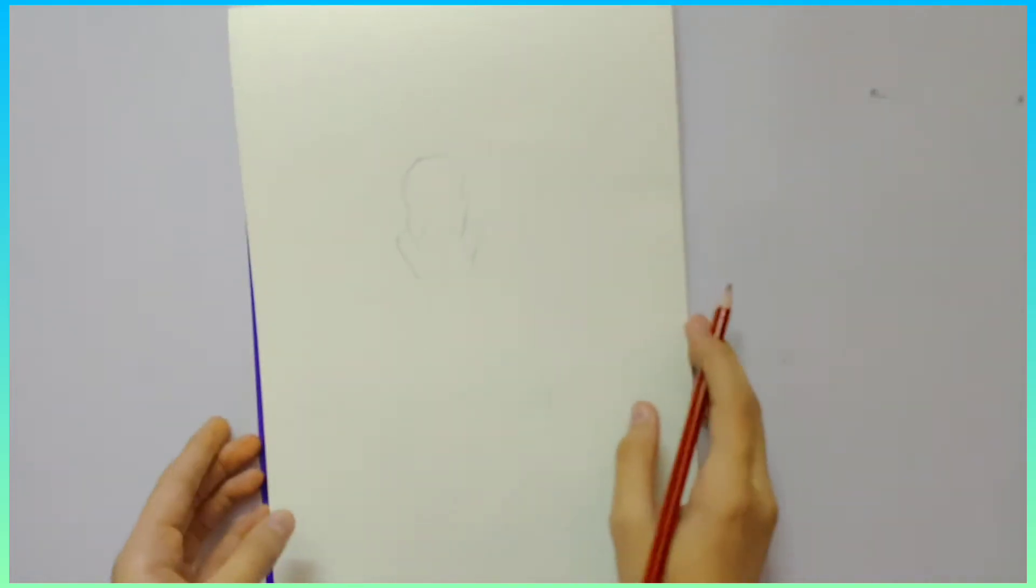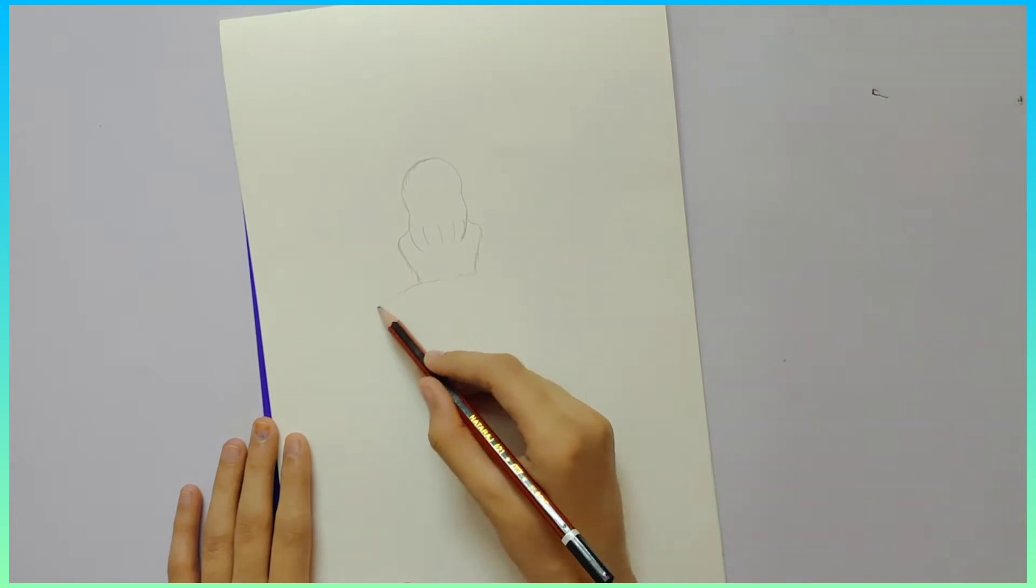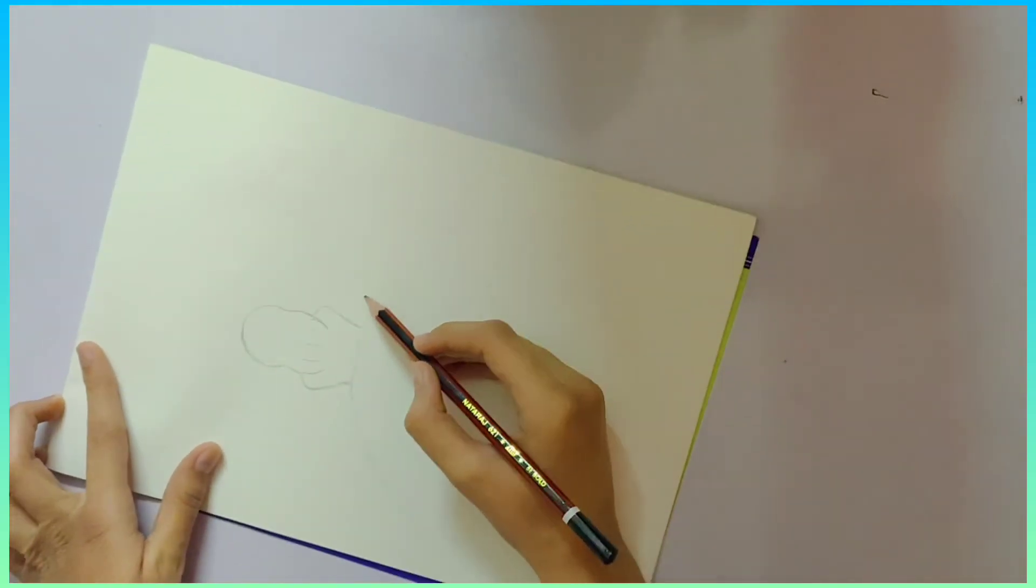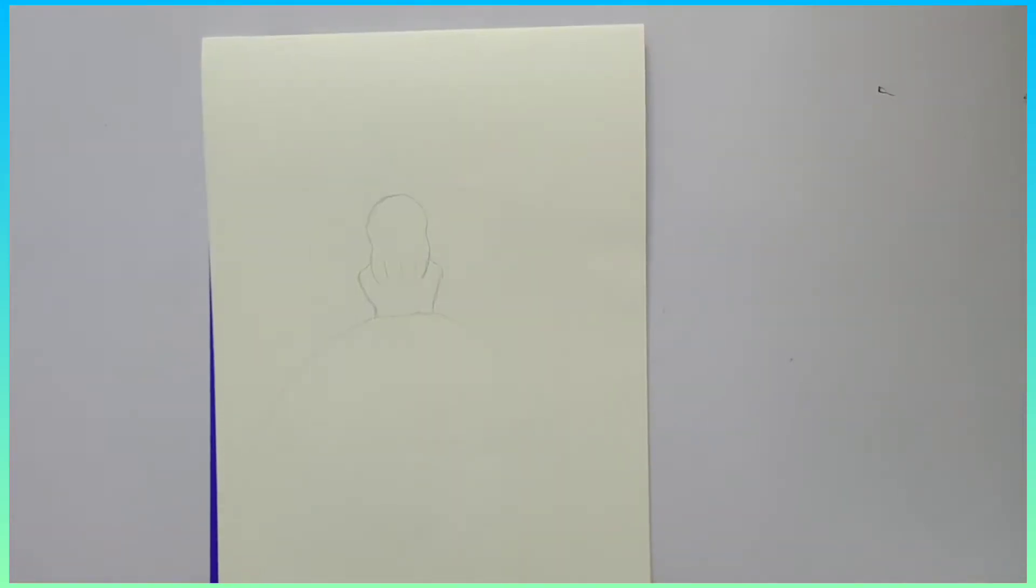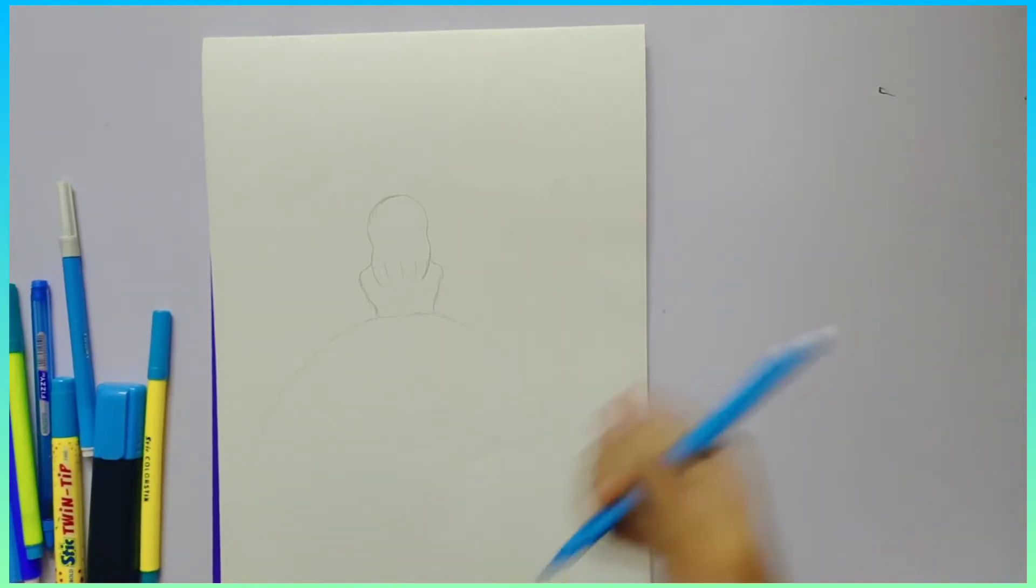Just with the pencil, very lightly, make the borders of your gown, like how floaty you want it to be. Now we are going to take all of the blue things and sketch the gown out.